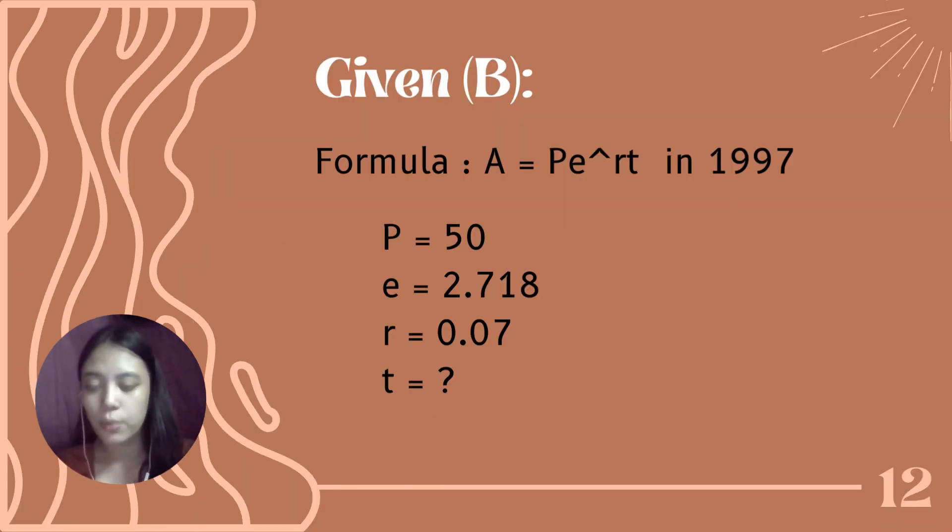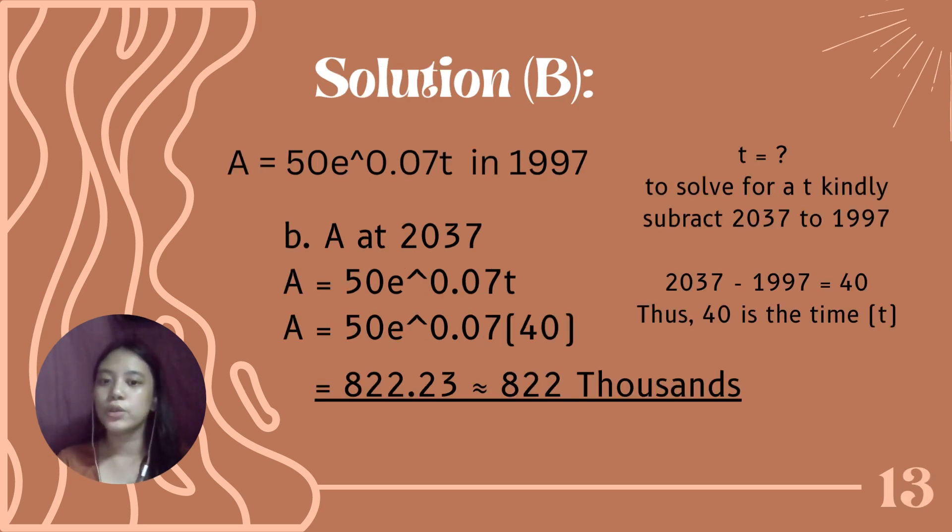Let's go to letter B. What are the given in letter B? The formula is still A equals Pe raised to rt in 1997. P is 50, e is 2.718, r is 0.07, and A is missing. We need to find A.